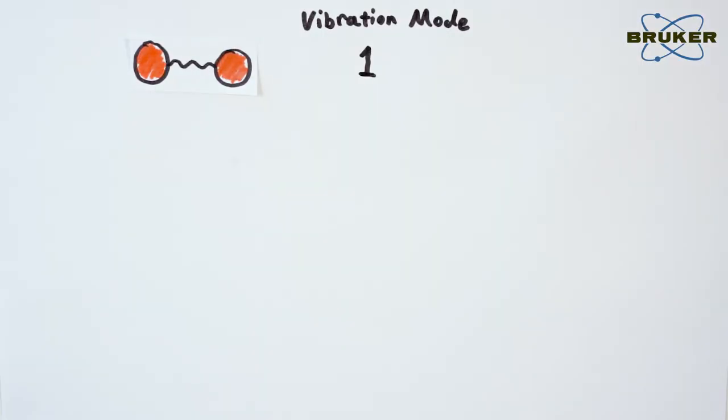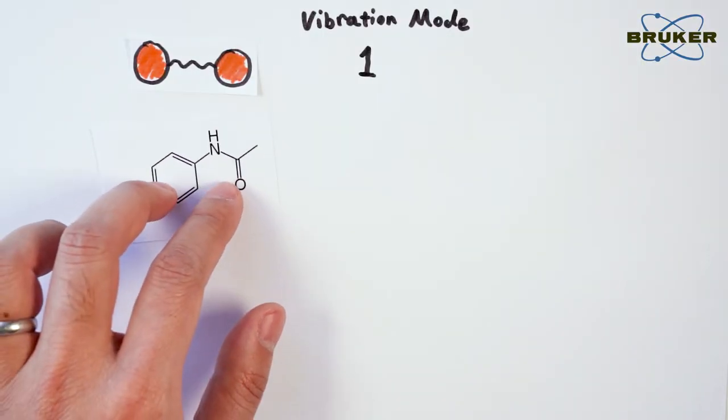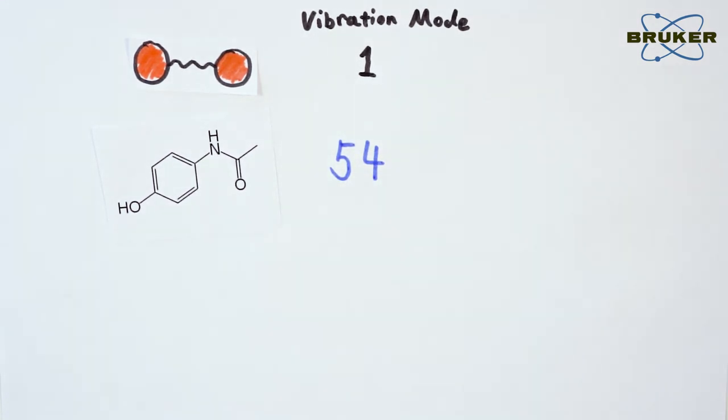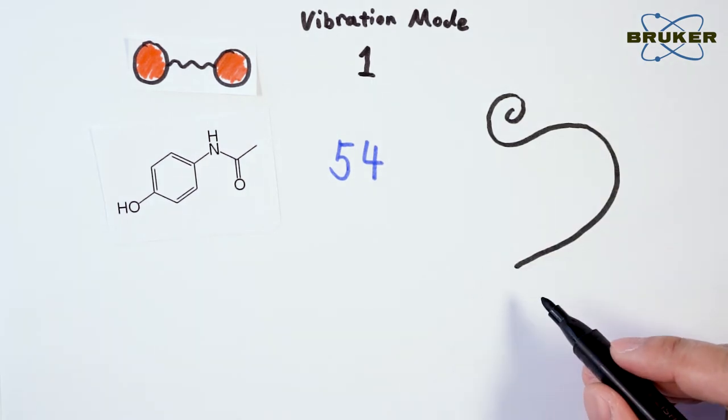A more complex molecule, such as paracetamol, has 54 normal vibrational modes and each mode has its own natural frequency.